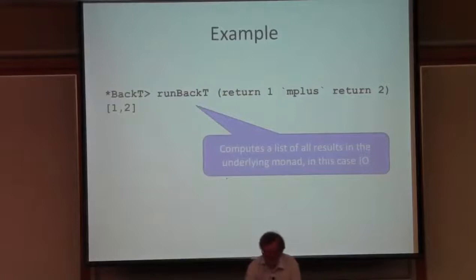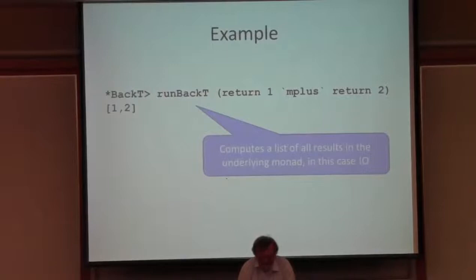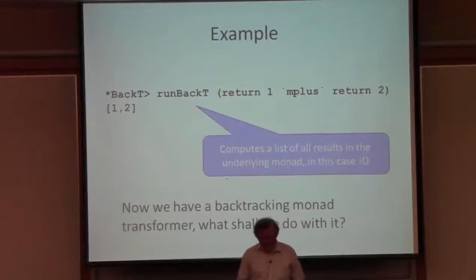A simple test is to run a backtracking monad computation on return 1 plus return 2. Using a runBacktracking function that collects a list of all results and returns them, sure enough we get 1 and 2. So now I've got a backtracking monad transformer.